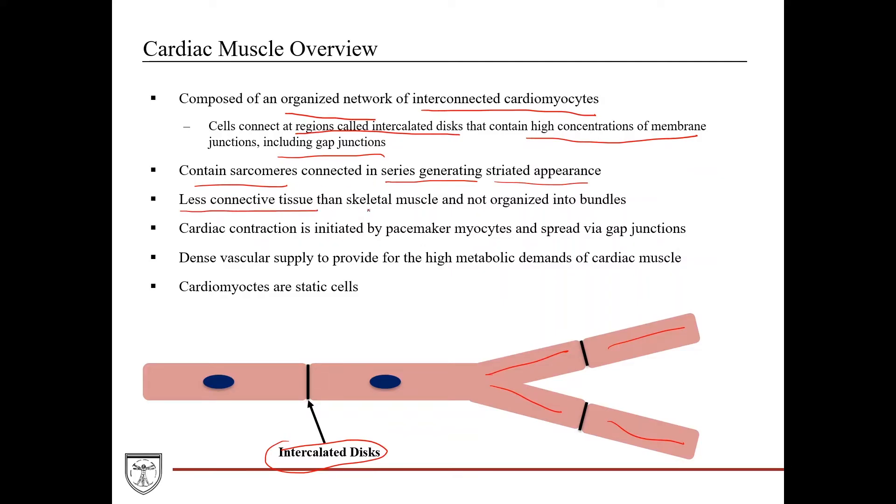However, there's less connective tissue in cardiac muscle than there is in skeletal muscle, and it's not as organized into the bundles, like the fascicles, the myofibers, the myofibrils. It's not that level of organization. It's more this branching network of different cardiac muscle cells. Cardiac contraction is not initiated by neural input. It's actually initiated by specialized myocytes called pacemaker myocytes, and then it's spread via gap junctions.